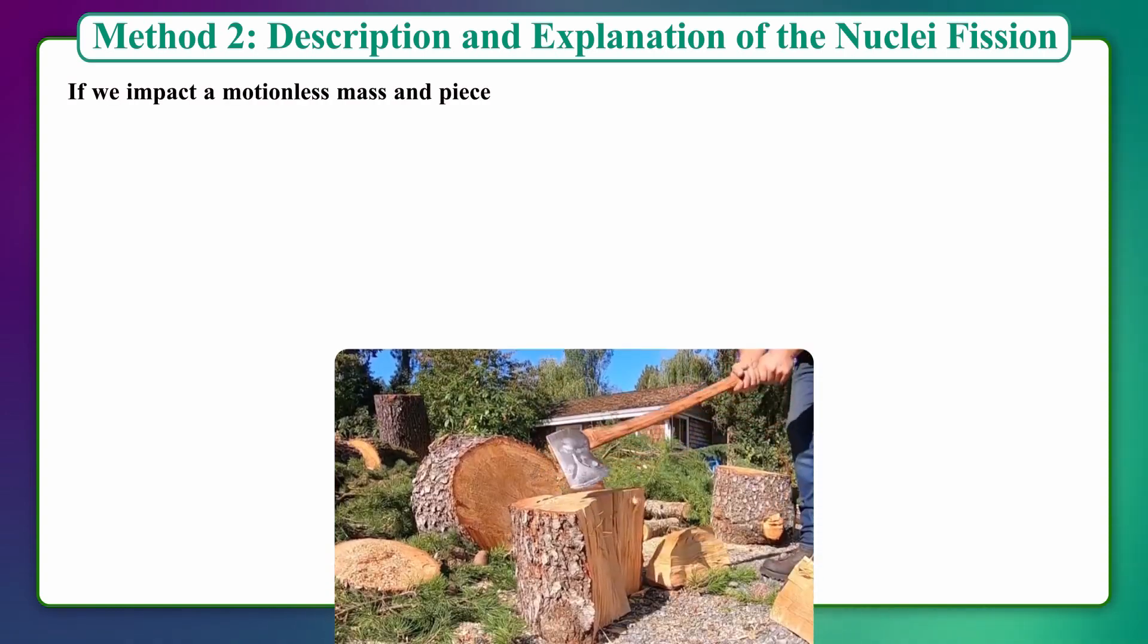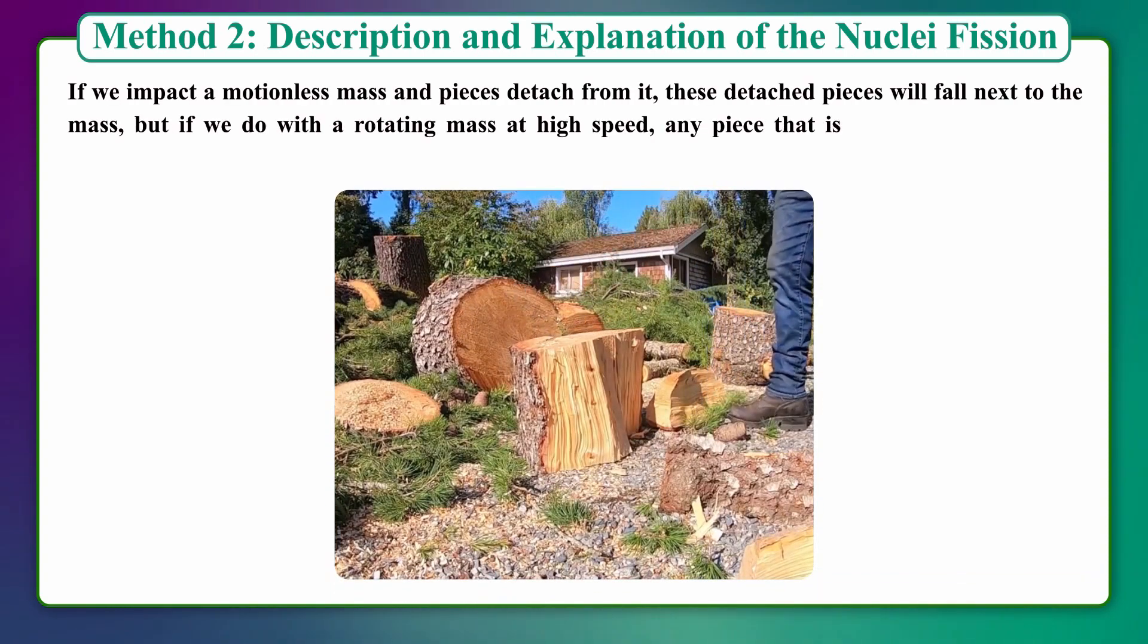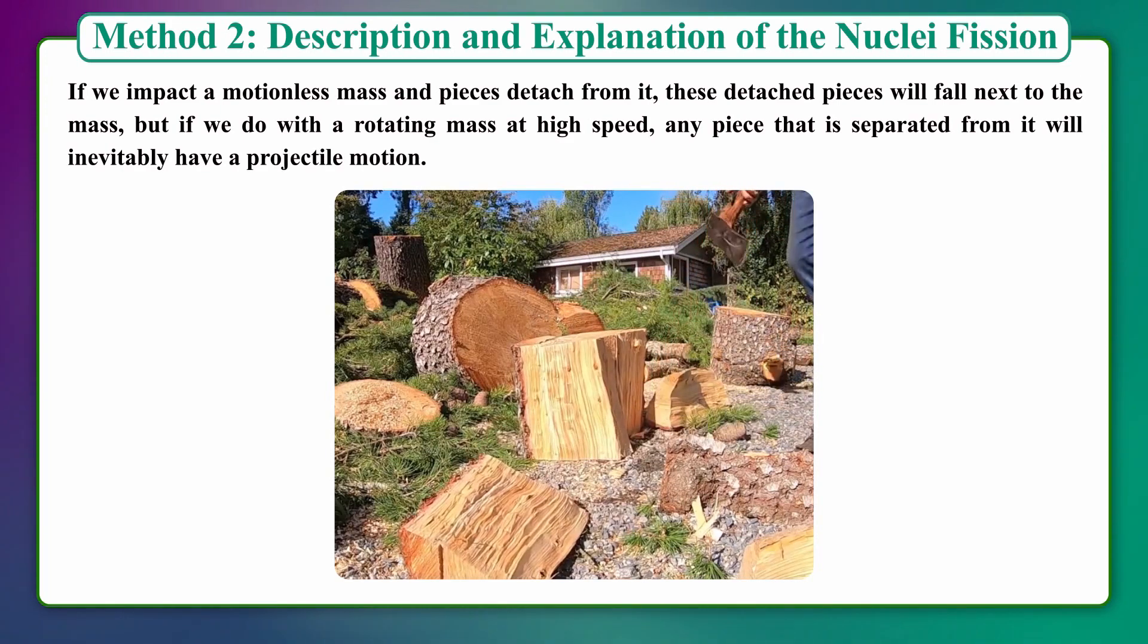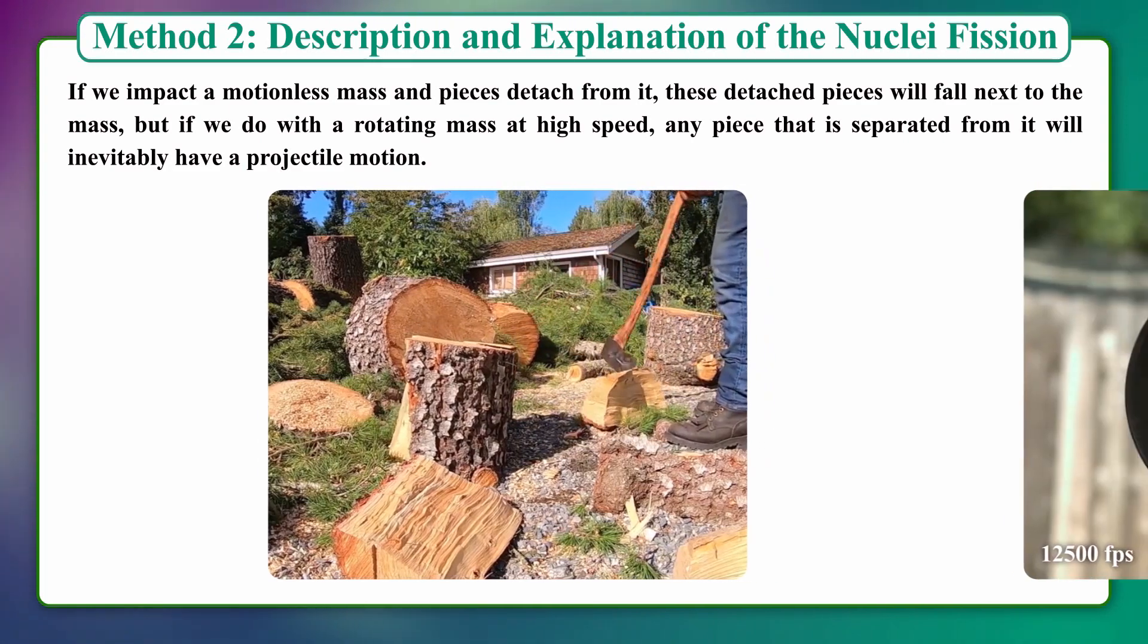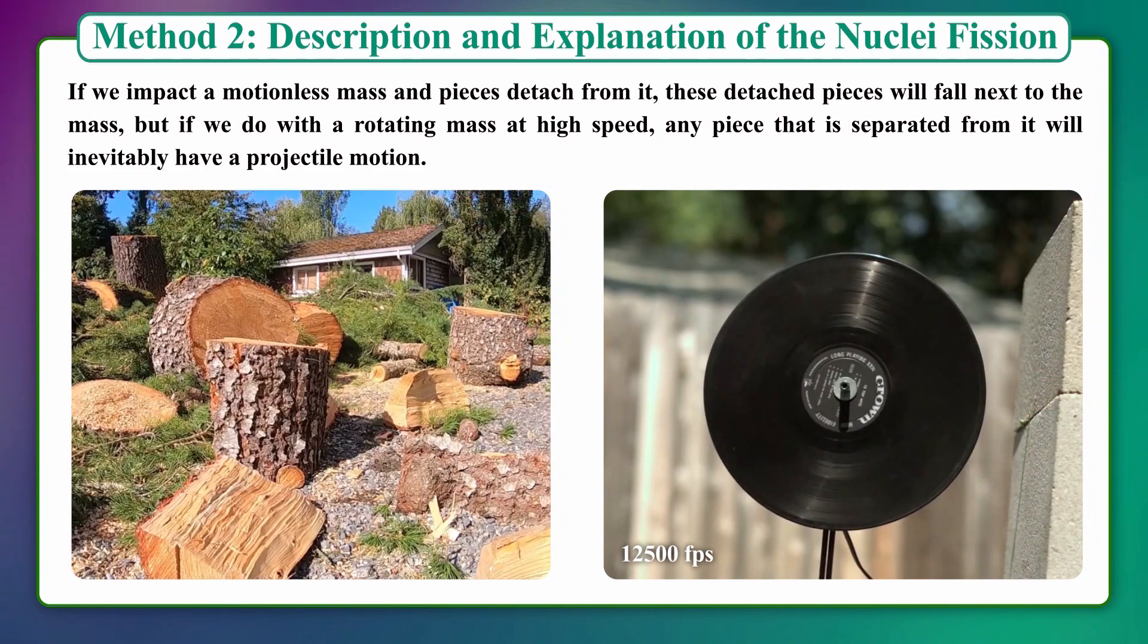Method 2: Description and Explanation of Nuclear Fission. If we impact a motionless mass and pieces detach from it, these detached pieces will fall next to the mass. But if we impact a rotating mass at high speed, any piece separated from it will inevitably have projectile motion.